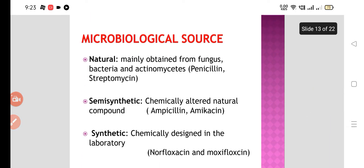Now, microbiological sources — or sources of antibiotics. Mostly they are natural, obtained from fungi, bacteria, and actinomycetes. Examples include penicillin and streptomycin. We also have semi-synthetic antibiotics, where we do some chemical modification on the natural compound — so we call it semi-synthetic.